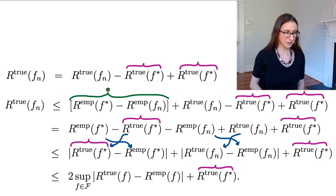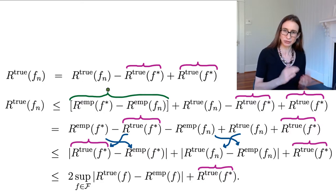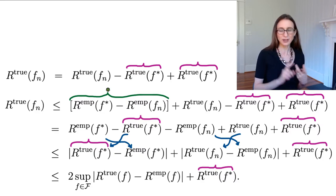So in the next part I can do two times the uniform deviation between the true risk and the empirical risk, and I can use it both for f star and f n.